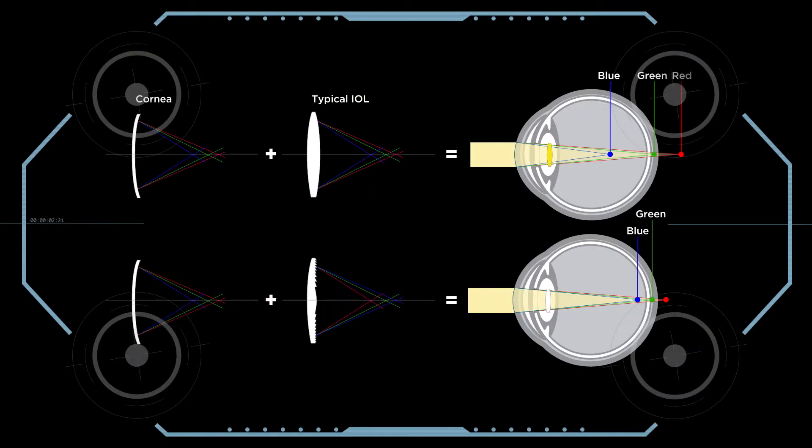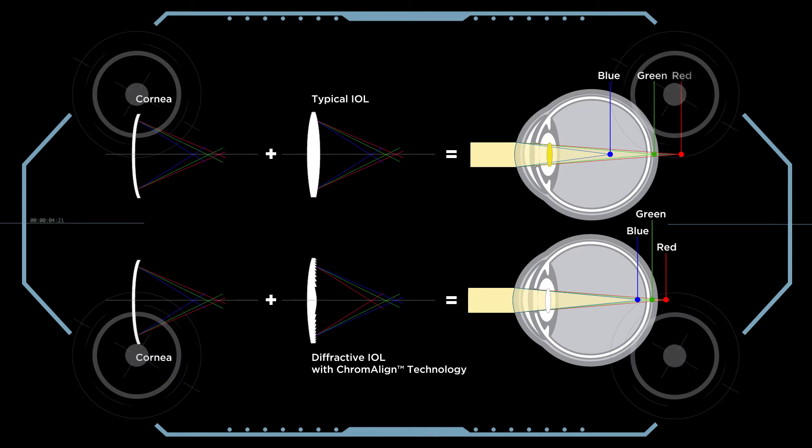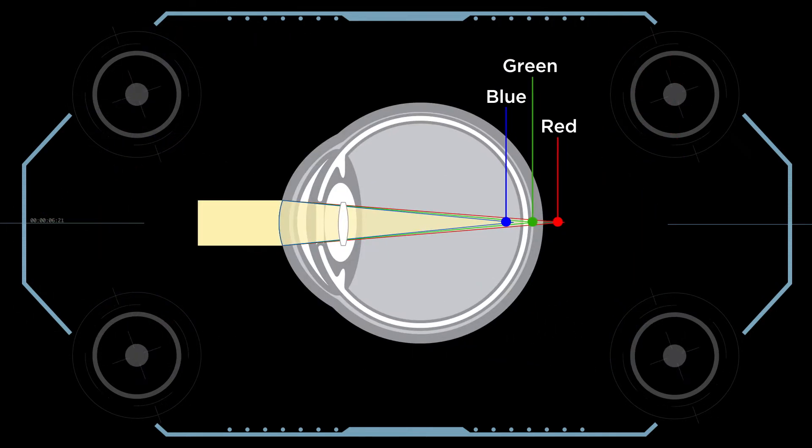The Technis Synergy IOL also features Primaline technology which corrects chromatic aberration by bringing both high and low wavelengths to a condensed focal point and optimizes image contrast over the full range of distances.